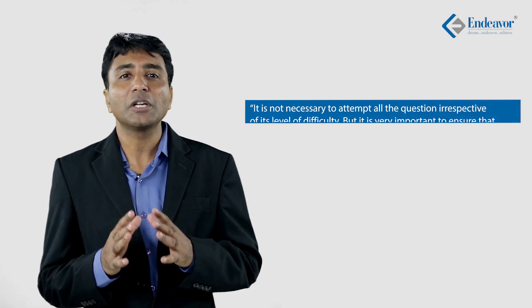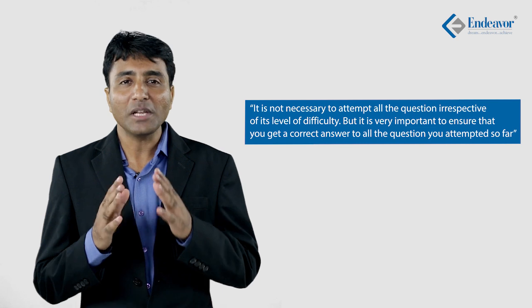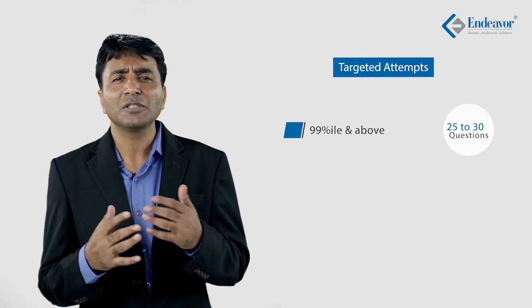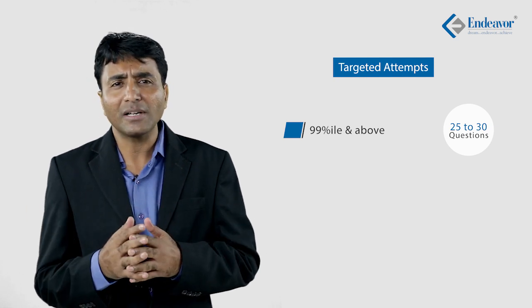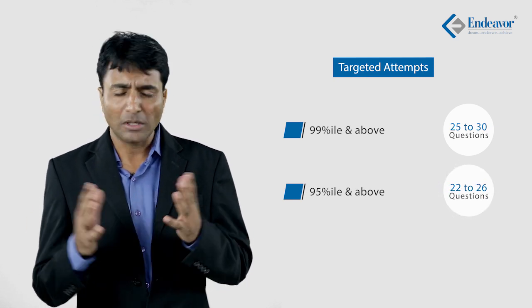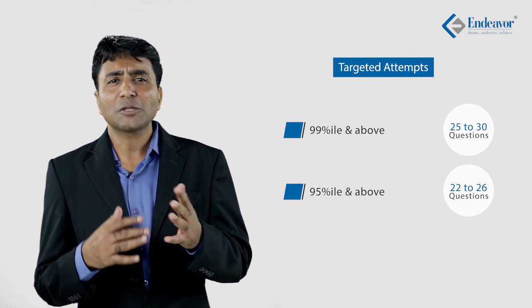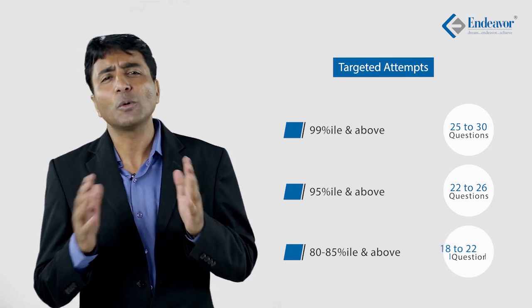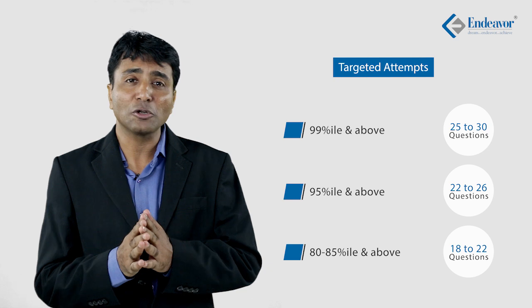If the exam is tough, it is tough for everybody. What matters is how you react and how you handle those tough questions. Remember, it is not necessary to attempt all questions regardless of difficulty, but it is very important to ensure you get correct answers to all the questions you attempt. For students aspiring for 99 percentile and above, 25 to 30 questions is a good attempt. For 95 percentile and above, 22 to 26 questions should be decent. For students aiming for the minimum cutoff of top B schools — 80 to 85 percentile — 18 to 22 questions with 100 percent accuracy should be sufficient. Wishing you all the best.